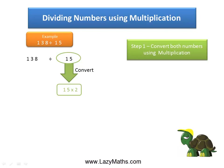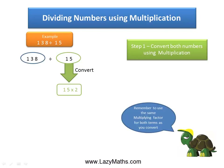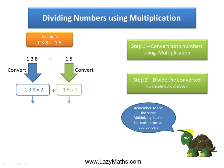As we have multiplied 2 with 15, in order to keep the balance of this equation, we also have to multiply the same 2 with 138. So we convert it to 138 times 2, with the division sign in between. Multiplying 138 times 2, we get 276, and 15 times 2 of course is 30.